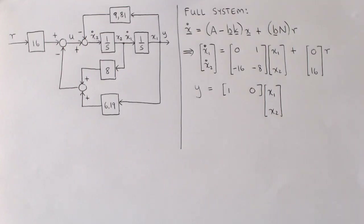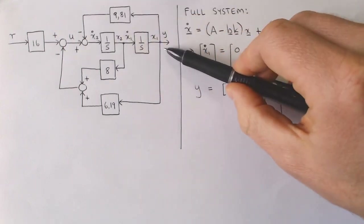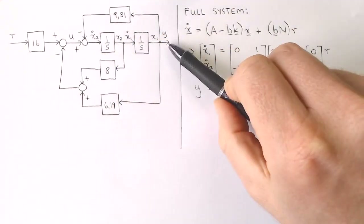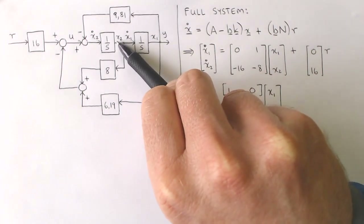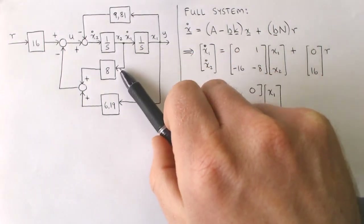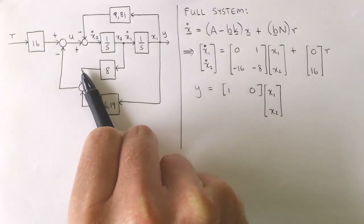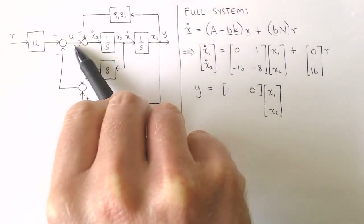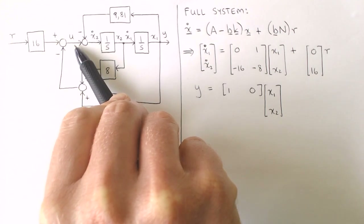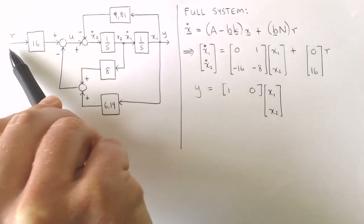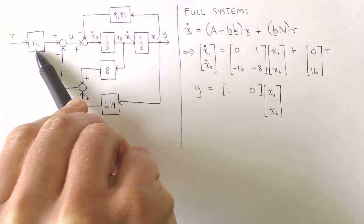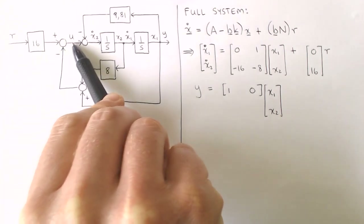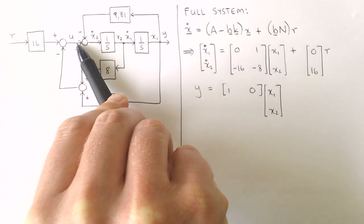We can draw a block diagram of the full system as follows. This is the plant model with input u, output y and states x1 and x2. The states are multiplied with the state feedback gains and the results form one component of the plant input. The reference input is multiplied with the feed forward gain n and the result forms the other component of the plant input.